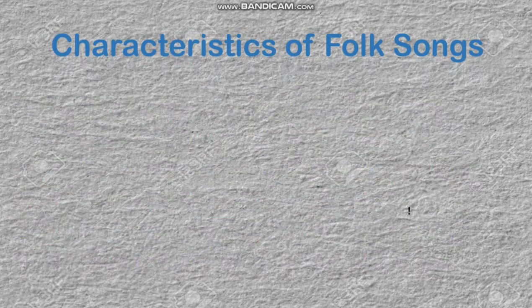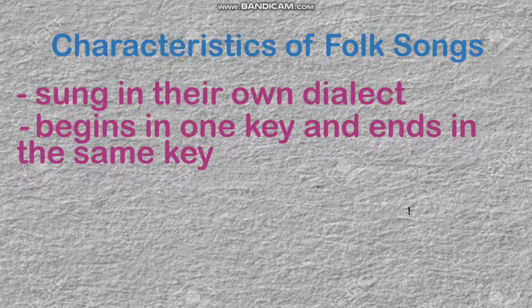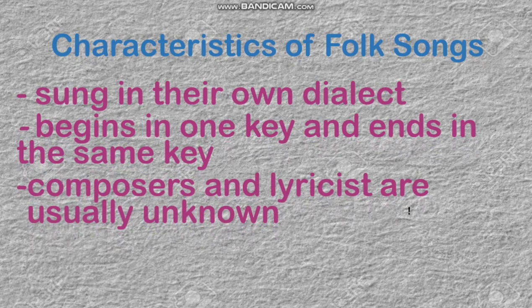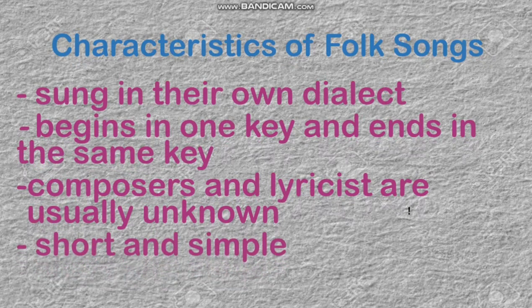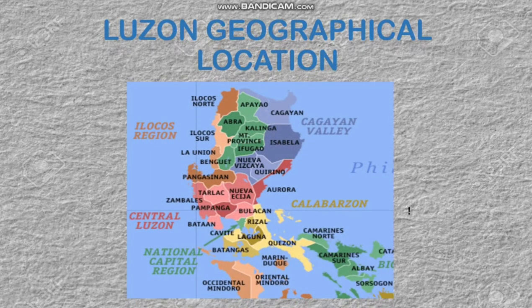The characteristics of folk songs: they are sung in their own dialect — later on we have different examples of folk songs in different dialects. They begin in one key and end in the same key. Composers and lyricists are usually unknown, and the songs are short and simple. Here is the Luzon geographical location. As you can see, we have the Ilocos Region, the Cagayan Valley, Central Luzon, Calabarzon, Bicol Region, and the National Capital Region.